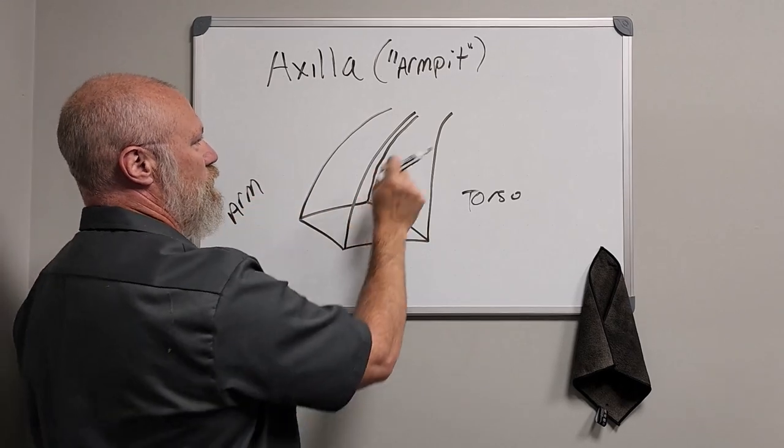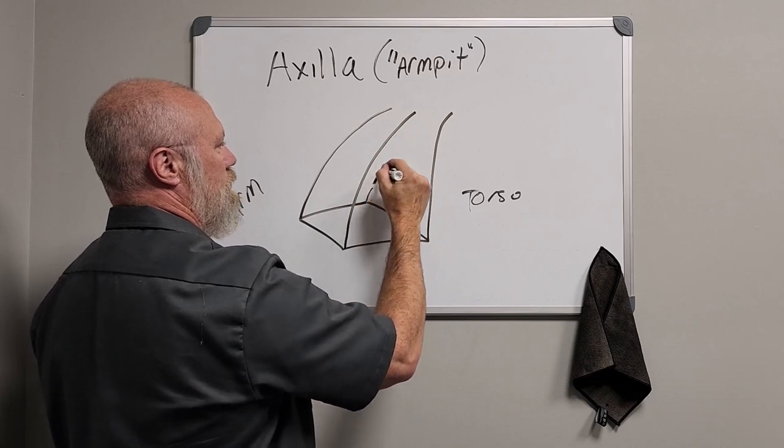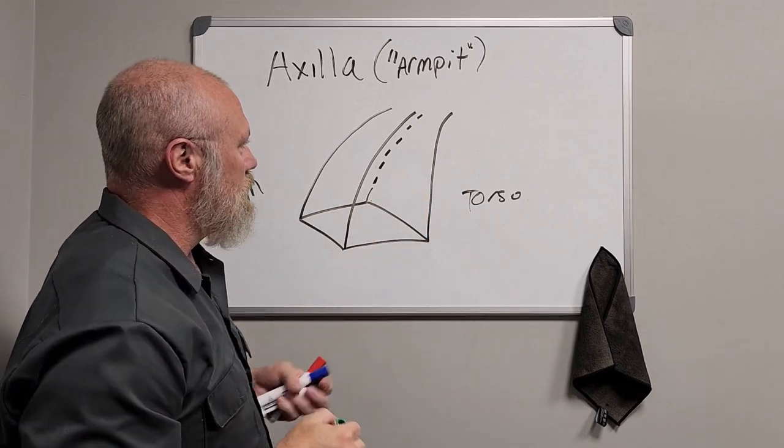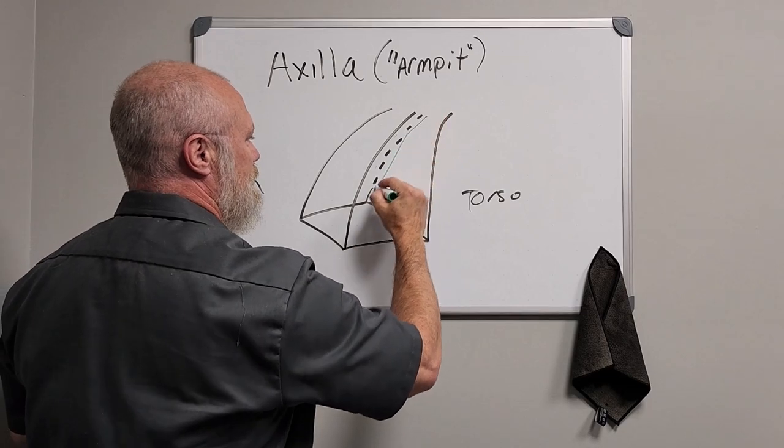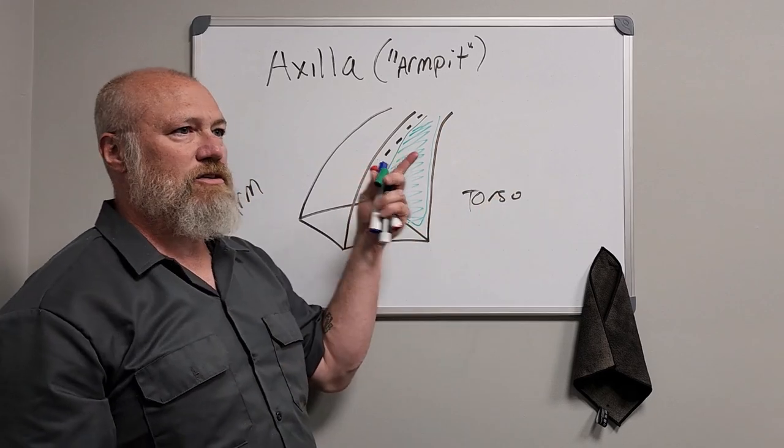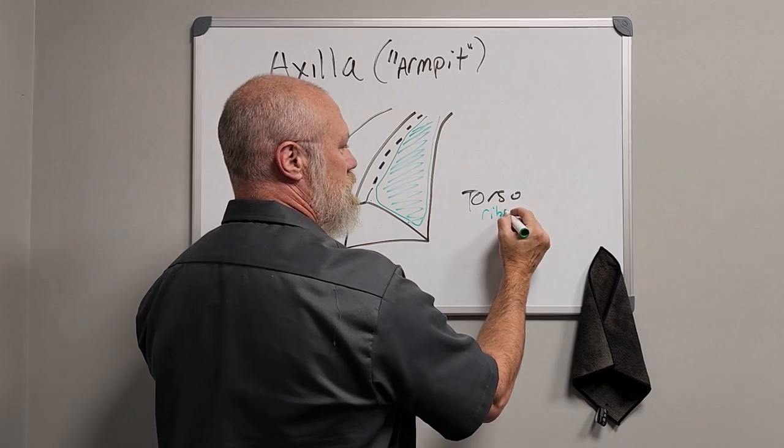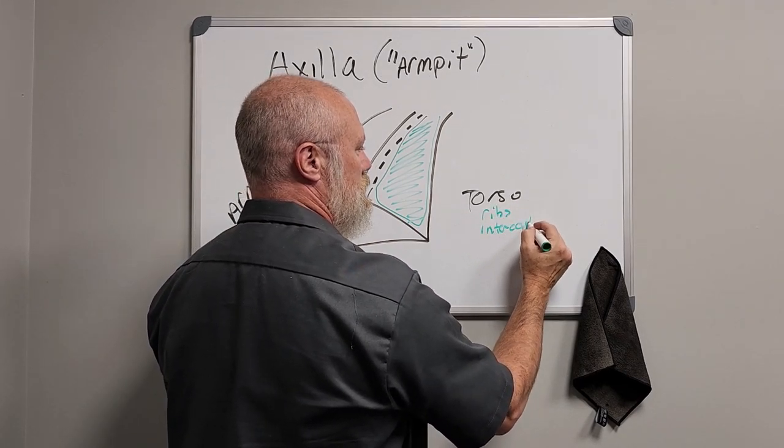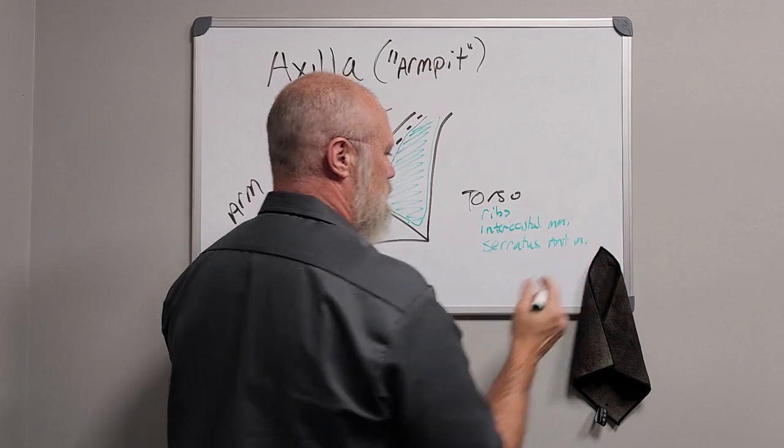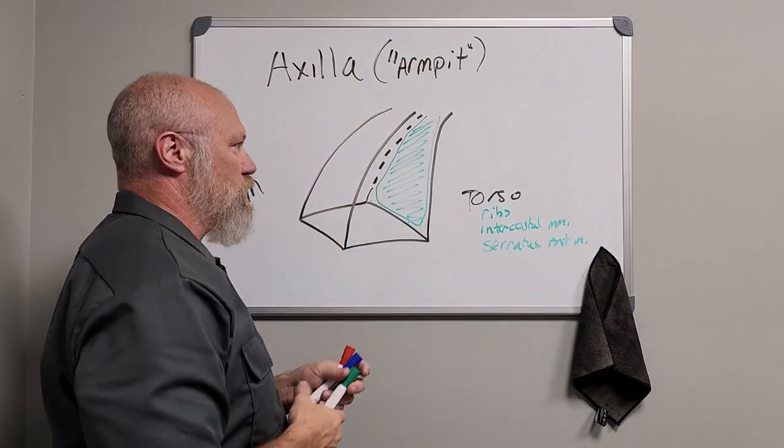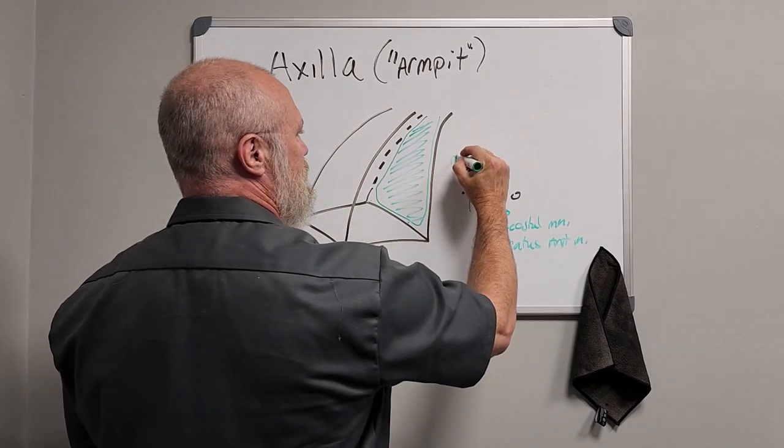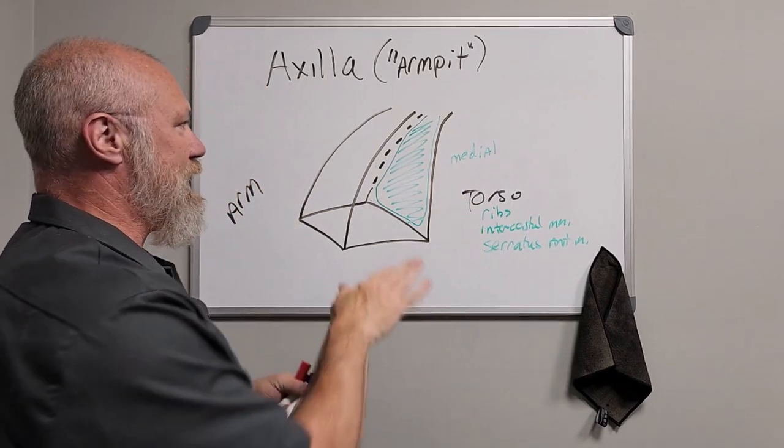This surface over here, the surface that is outlined in green, this green surface that's going to be towards your torso is going to be the torso, meaning ribs, intercostal muscles, and specifically the serratus anterior muscle. That's going to be on the surface of the torso. That's the medial boundary. Green is the medial aspect or boundary of the axillary region.